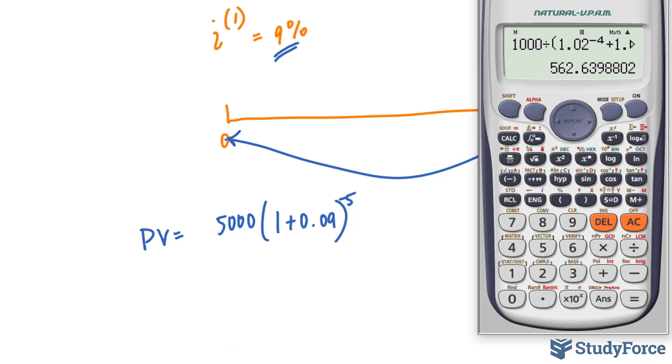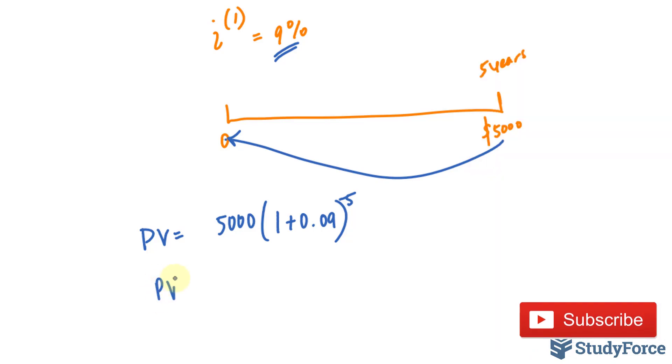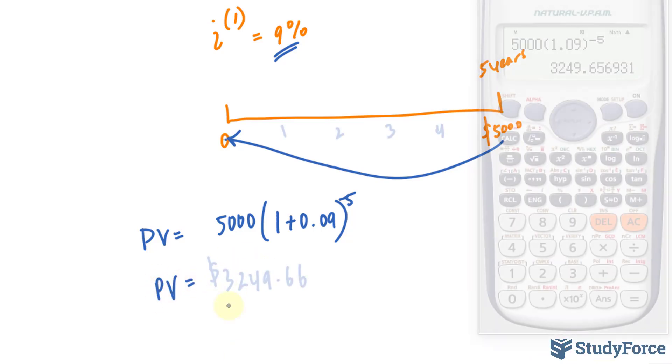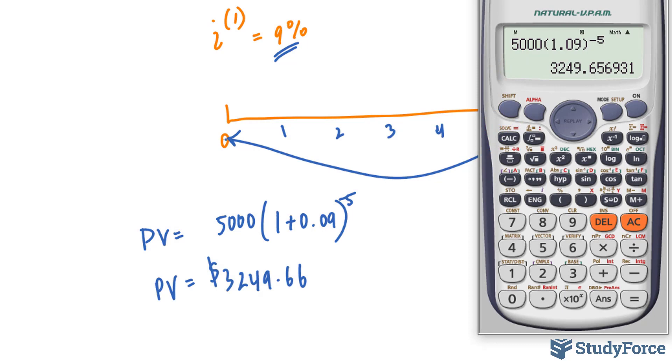So let's use our calculator: 5,000 × 1.09^-5. The present value of a debt that's worth 5,000 five years from now is 3,249.66. I've gone ahead and rounded to two decimal places, but it is common practice to keep all those decimal places and round at the very end. I've only done this for convenience.